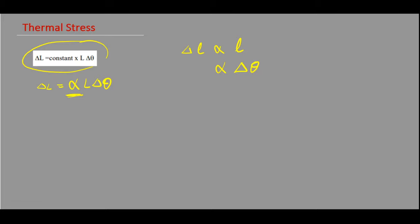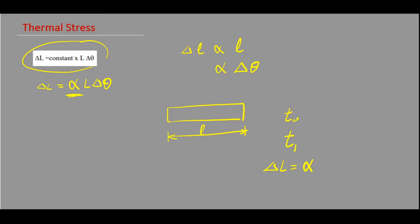More is alpha, more is the expansion — or more is the change in length with a unit change in temperature. If we compare two materials, more is alpha, more is the thermal expansion. Now let's assume a bar of length L. Initially the temperature is T-naught and it is increased to T1, so the change in length will be alpha × L × (T1 − T-naught). This gives the change in length.